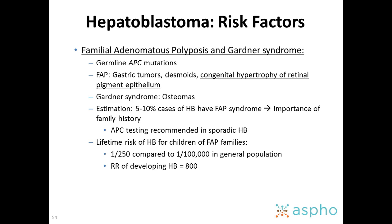The best-known association is with familial adenomatous polyposis and Gardner syndrome, defined by germline APC mutations. In FAP, these are usually gastric tumors and desmoids. These patients may also have congenital hypertrophy of the retinal pigment epithelium. Gardner syndrome also has osteomas. Around 5% to 10% of hepatoblastomas have FAP syndrome, so APC testing is recommended in sporadic hepatoblastoma. The lifetime risk of hepatoblastoma for children of FAP families is around 1 in 250, compared to 1 in 100,000 in the general population — a relative risk of around 800.